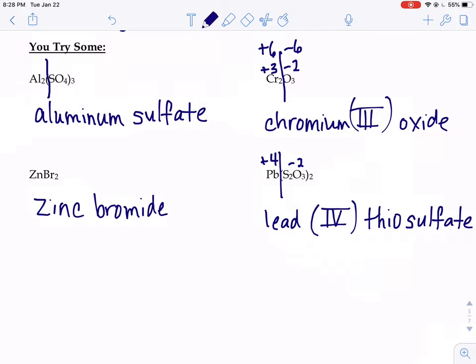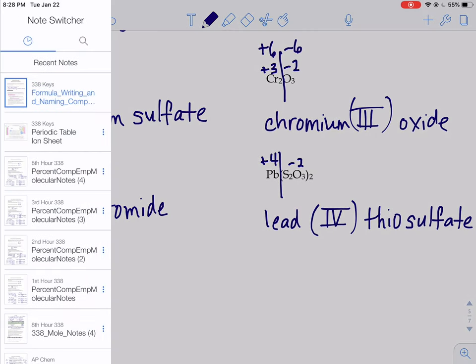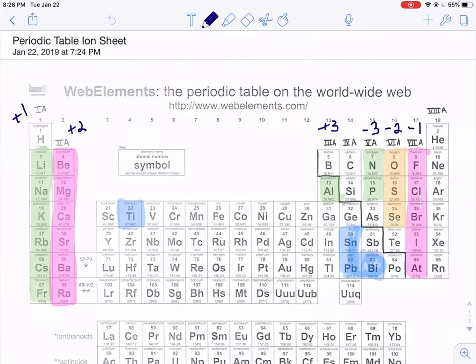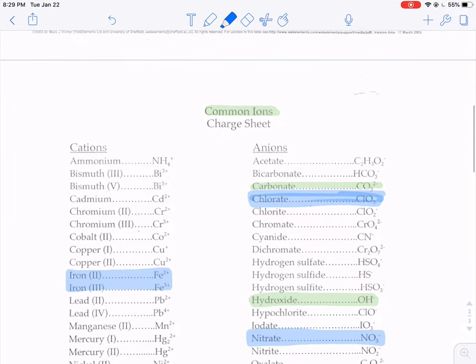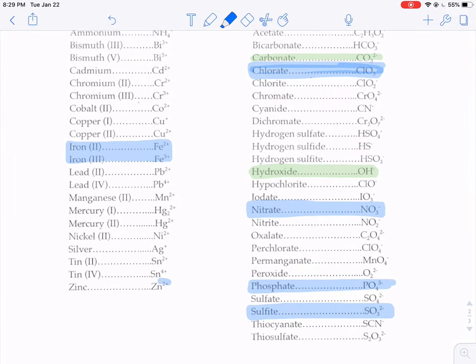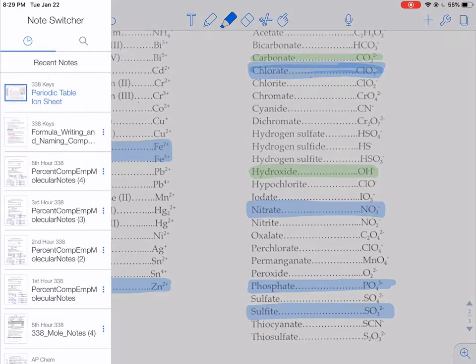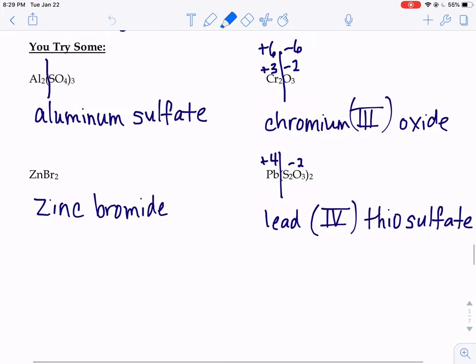The next guy, that ZnBr2, when you look at where Zn is on the periodic table, you might think that we need a Roman numeral. But zinc is one of the special ones that has a consistent charge no matter what. Zinc is always plus two. And when you look at it here, it doesn't say zinc Roman numeral two, it just says zinc. So that's what we're going to write down is just zinc.